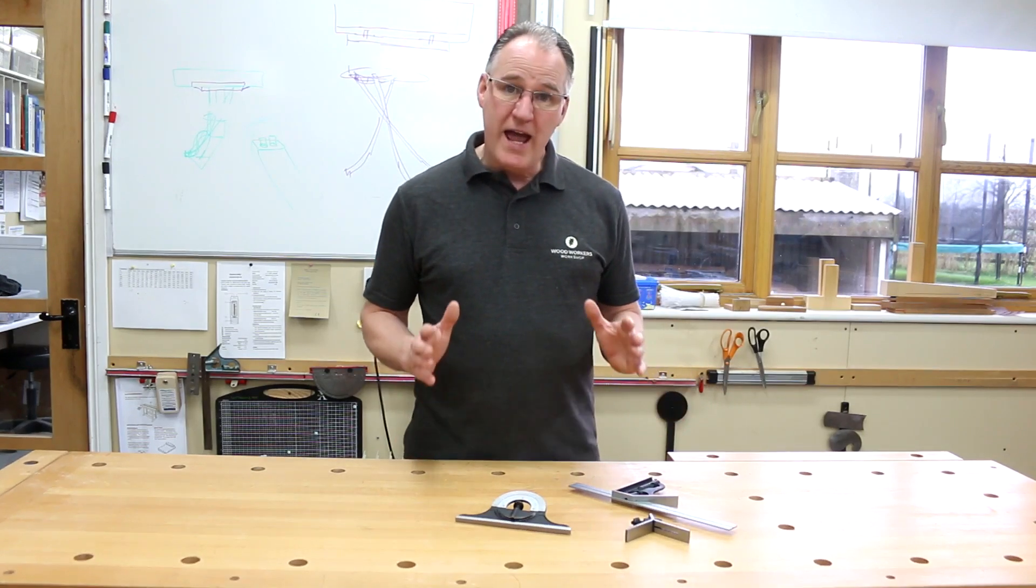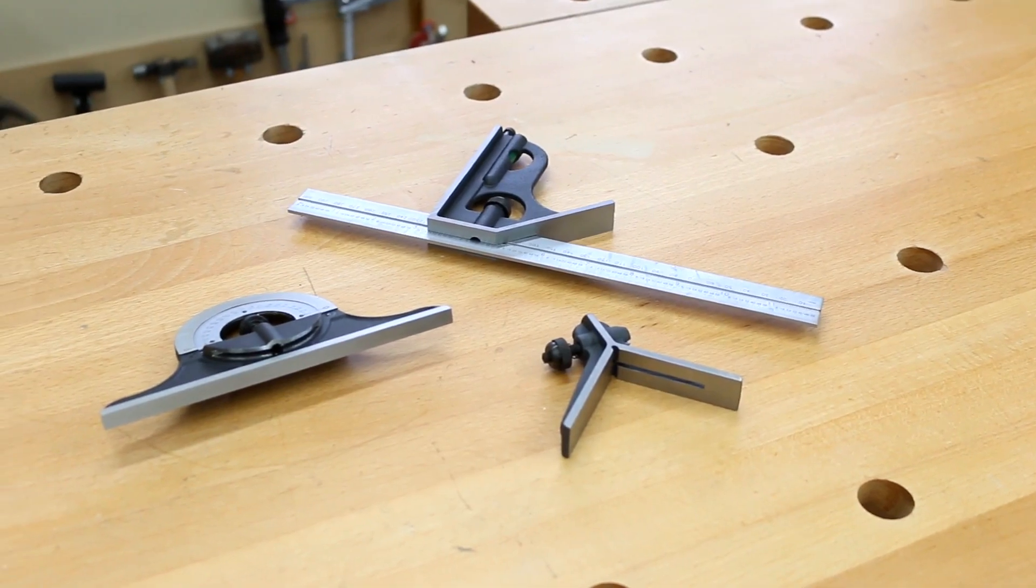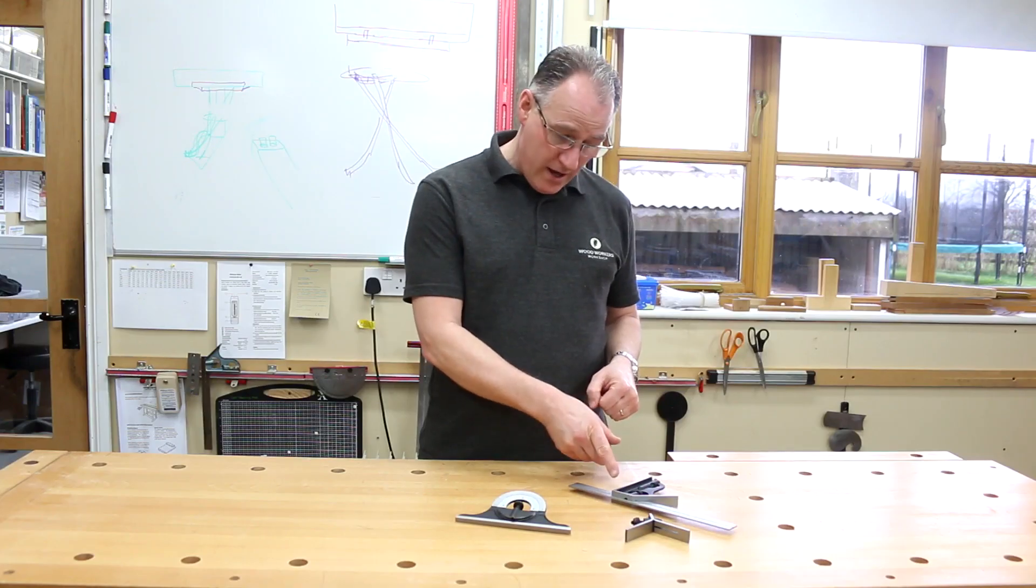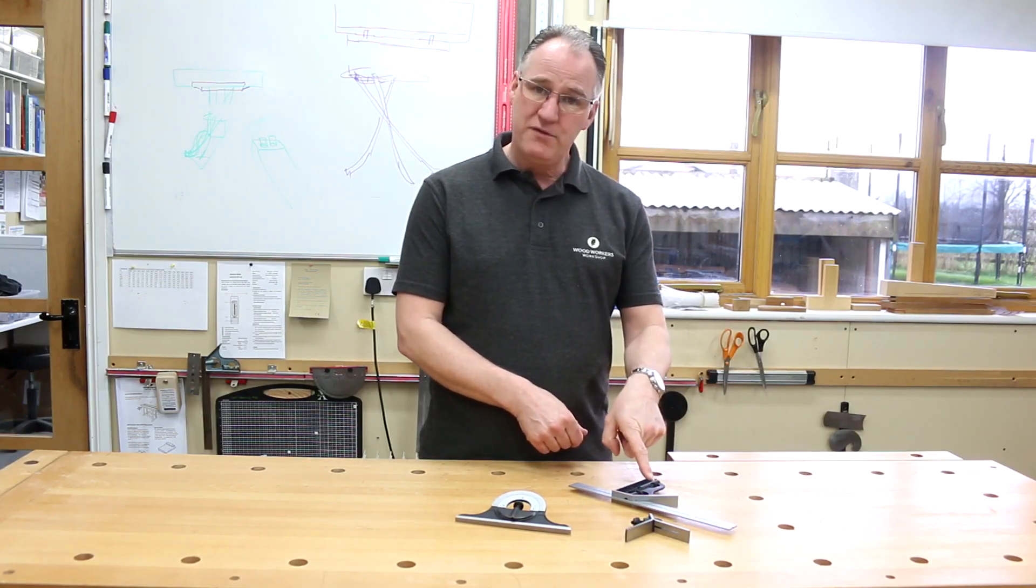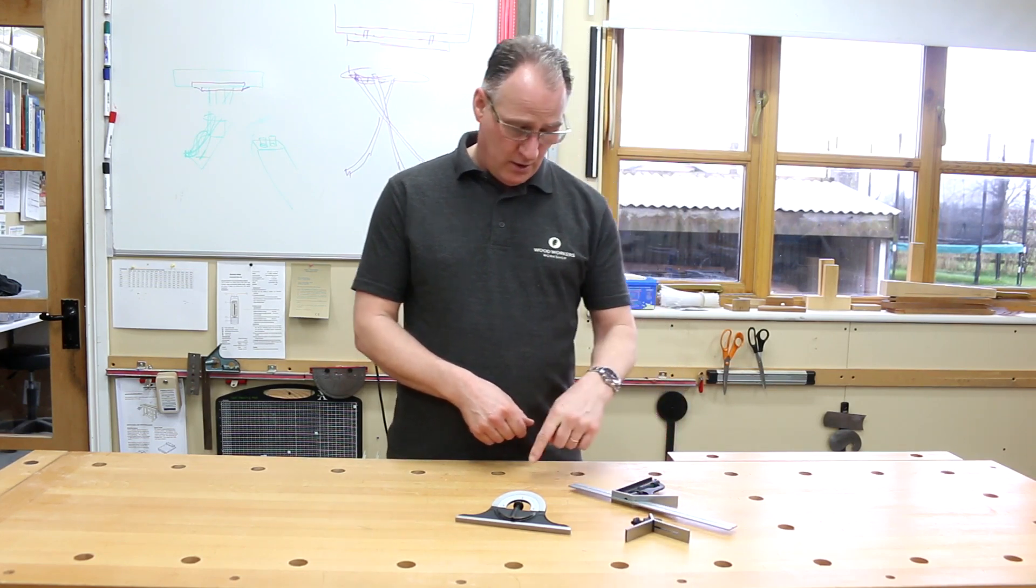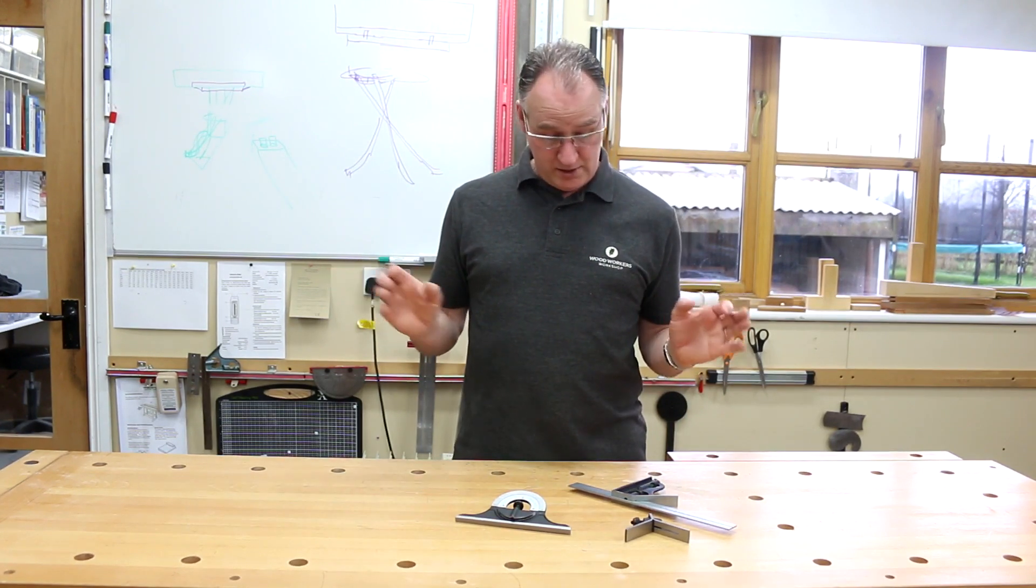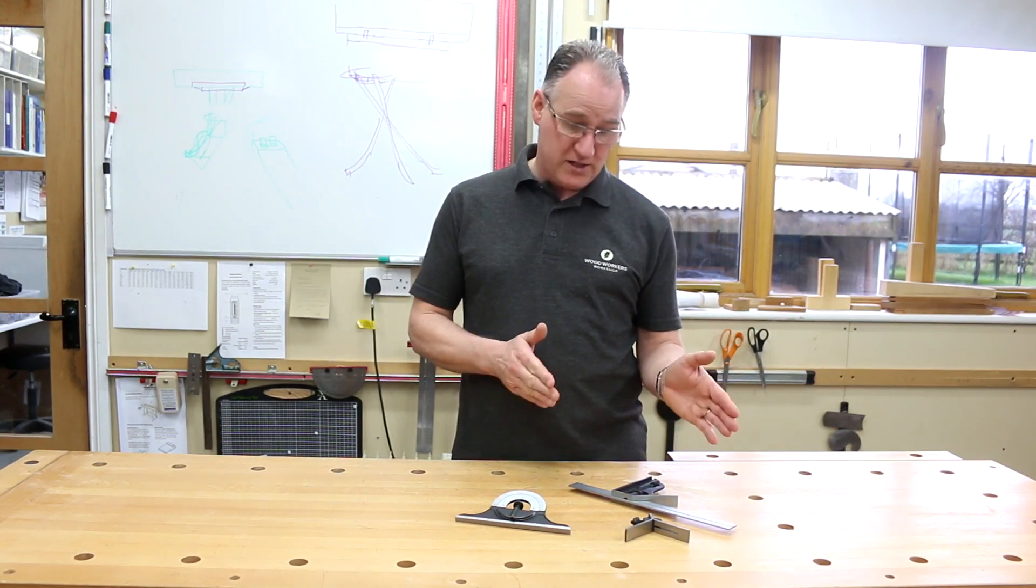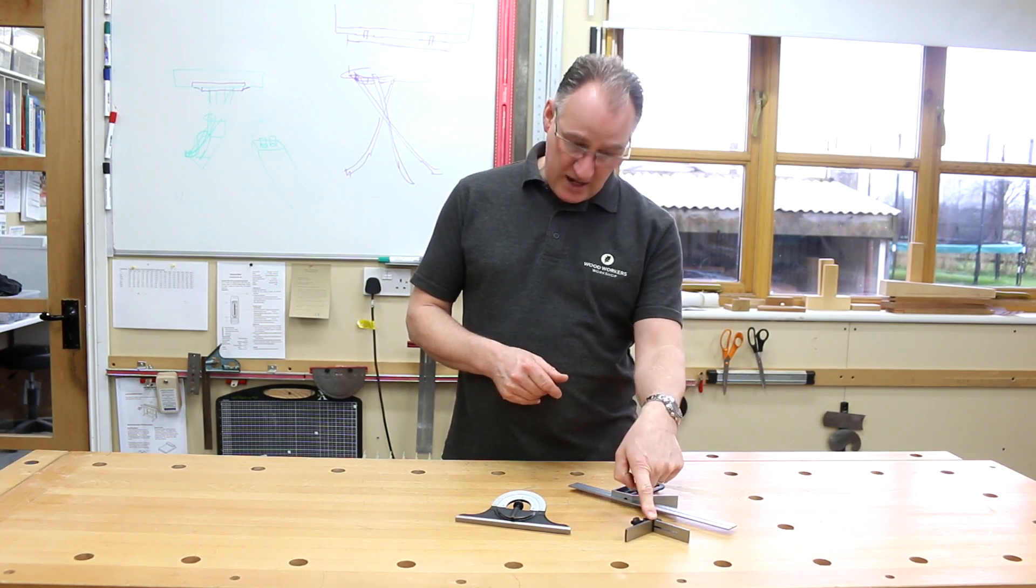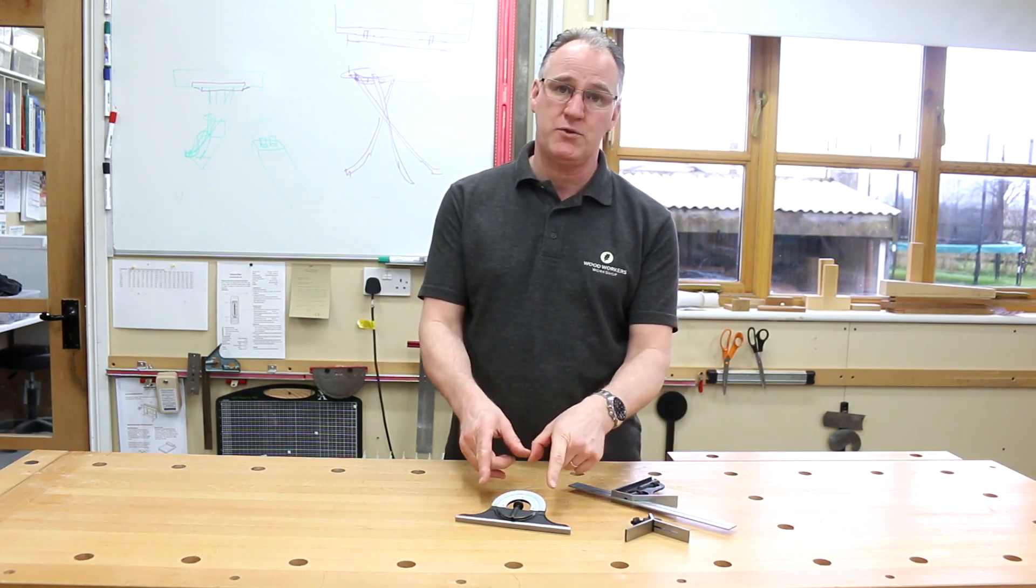What I have here is a classic combination set of squares. We've got a normal combination square which will have 90 and 45 degrees. We've got both metric and imperial. We can take the rule out of here which acts as a really good rule. It's satin anodized steel. We can use it in here as a center finder or on there as a very accurate protractor as well.